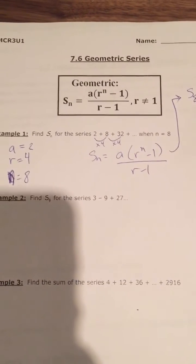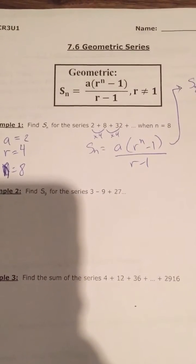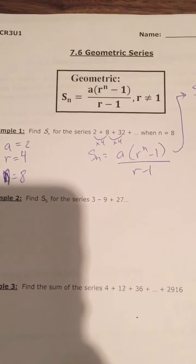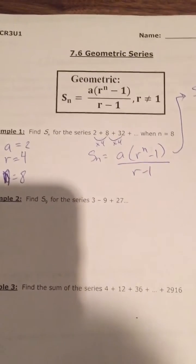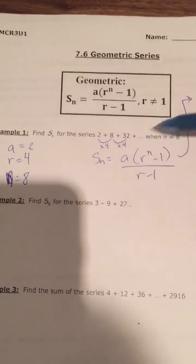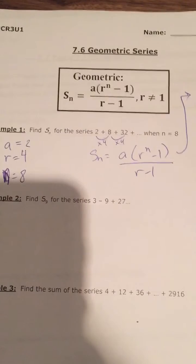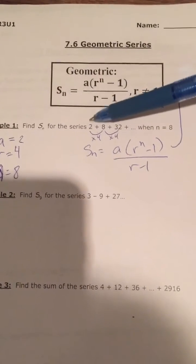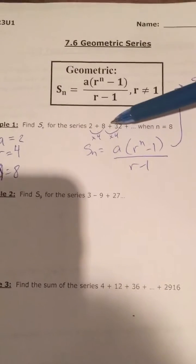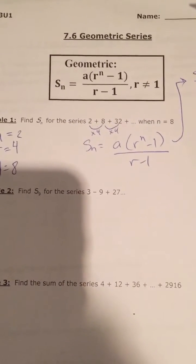We're going to take a look at 7.6 geometric series, much like arithmetic series but obviously with a geometric pattern. The difference between series and sequences: sequences are a sequence of numbers split by commas in between. A series are also numbers that follow a pattern, except they're being separated by addition or subtraction.